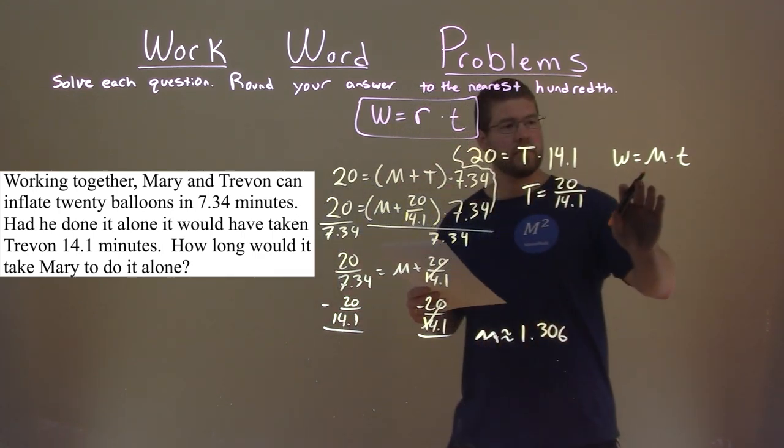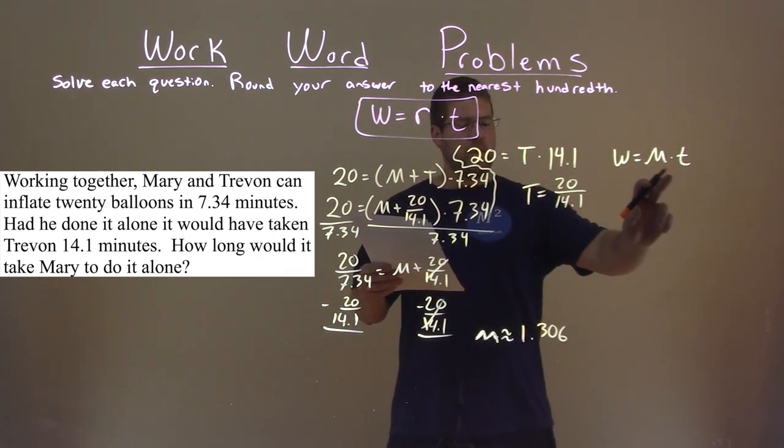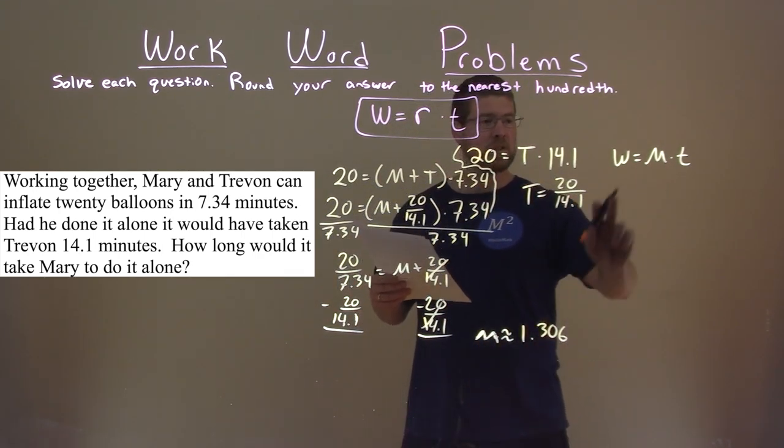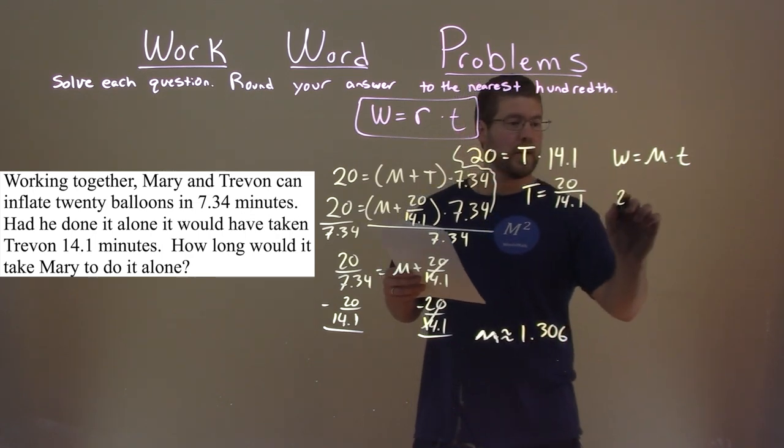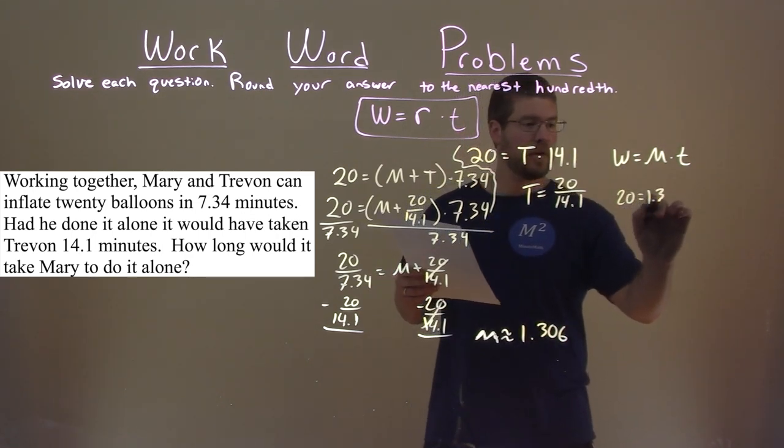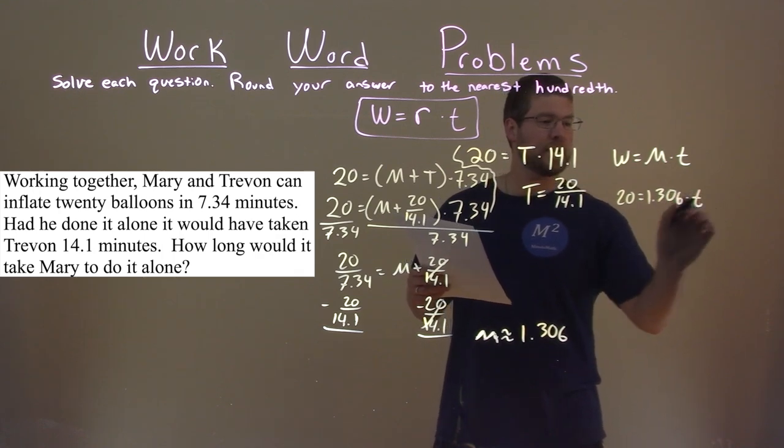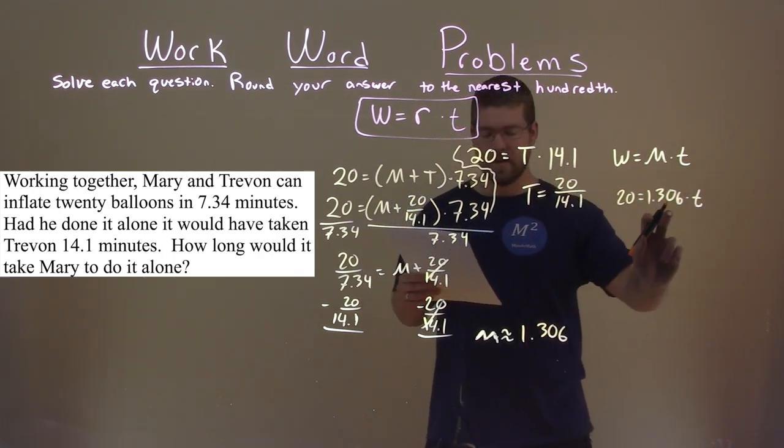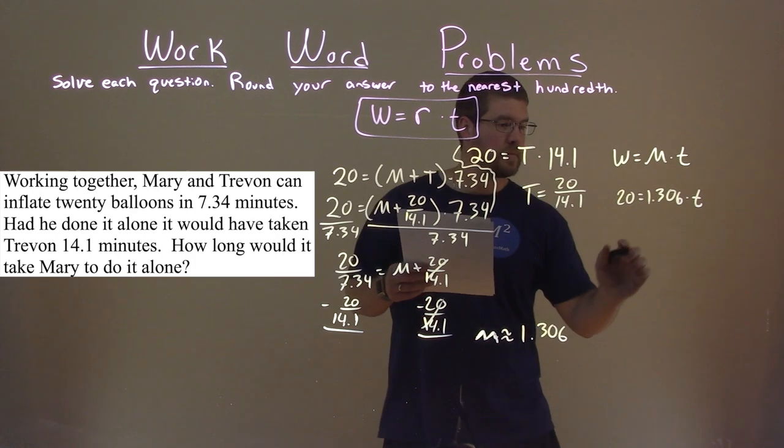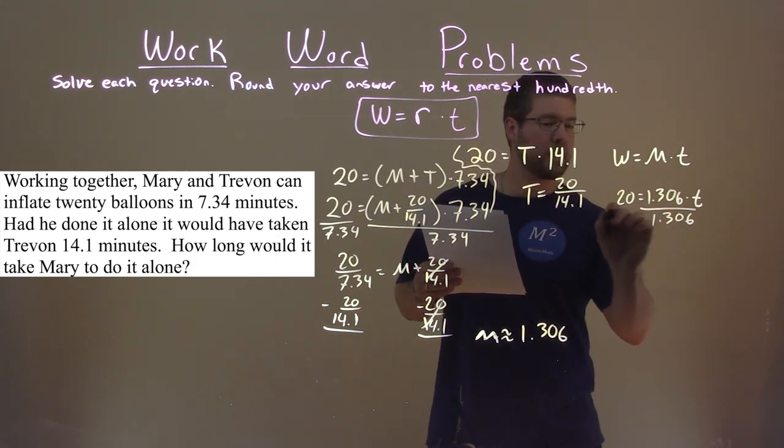Well, we know Mary's rate here. When we found Mary's rate and we actually know the work is going to be 20 balloons. So 20 balloons is equal to 1.306 times time. And we're substituting that in here. So now time by itself, we divide by 1.306 to both sides.